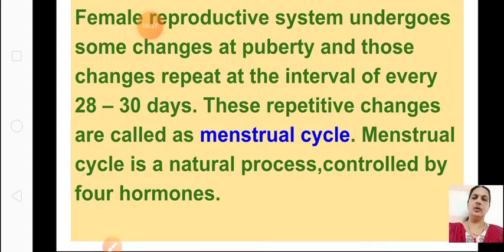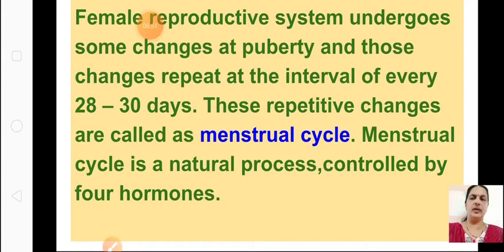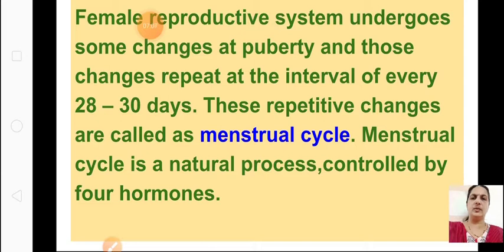Next we will see the menstrual cycle. The female reproductive system undergoes some changes at puberty and those changes repeat at intervals of every 28 to 30 days. After puberty, after the age of 12 to 13, females undergo changes in their body that repeat every 28 to 30 days.